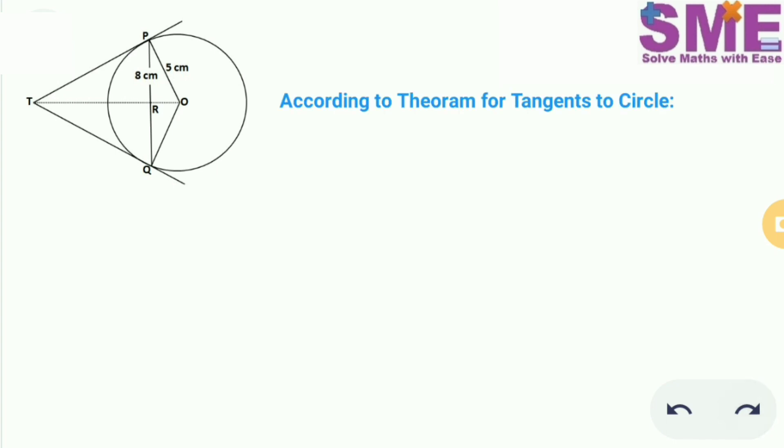Now according to the theorem for tangents to circle, length of tangents from external point are equal. So hence TP will be equal to TQ.